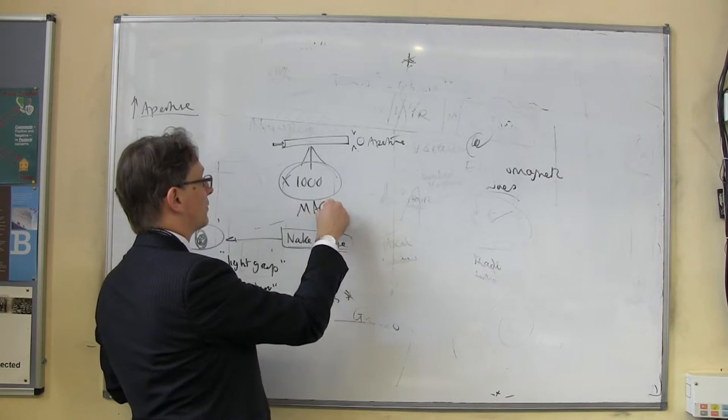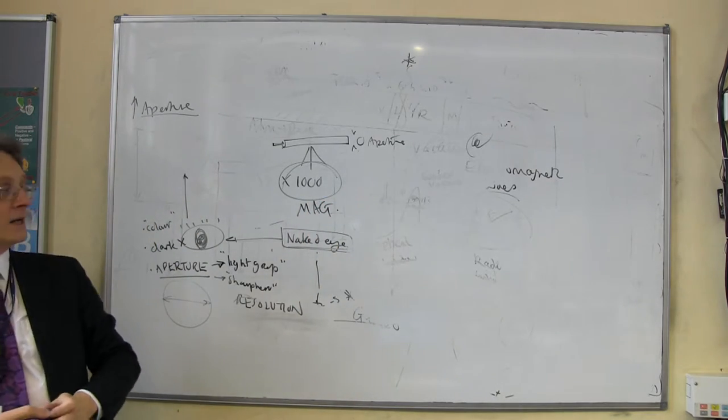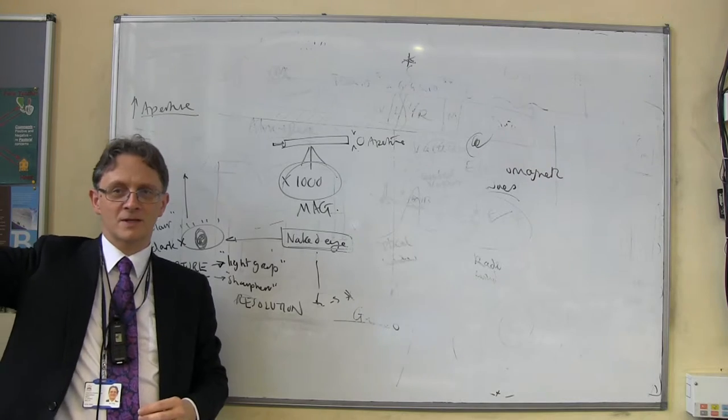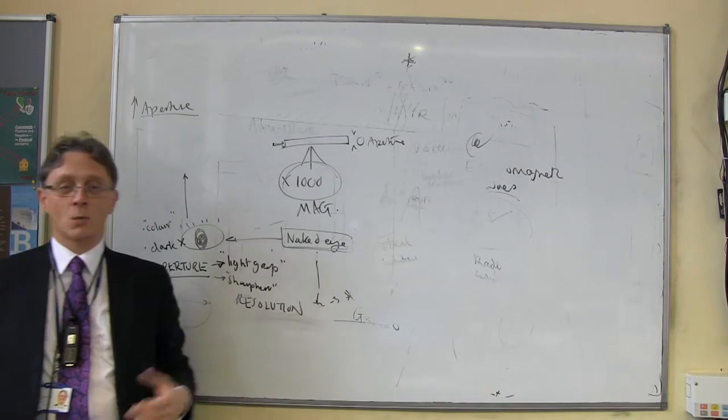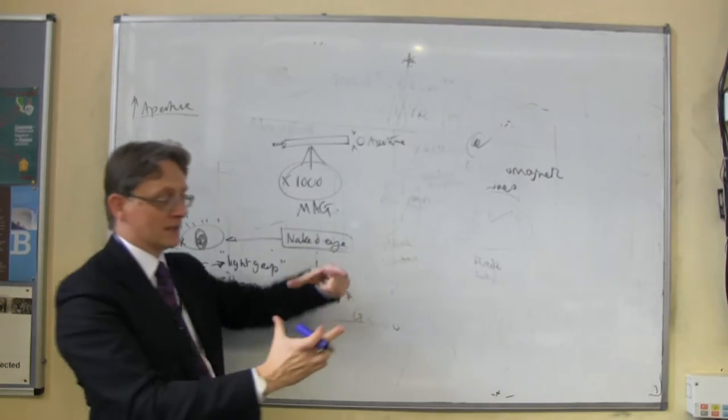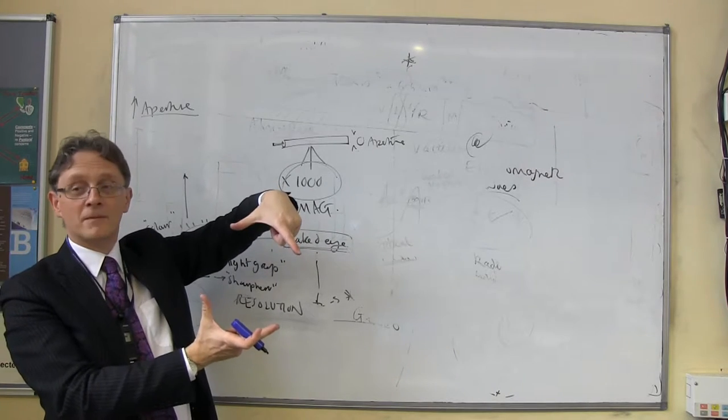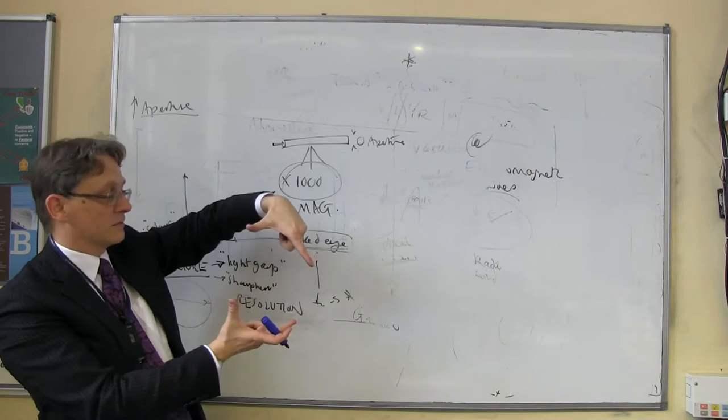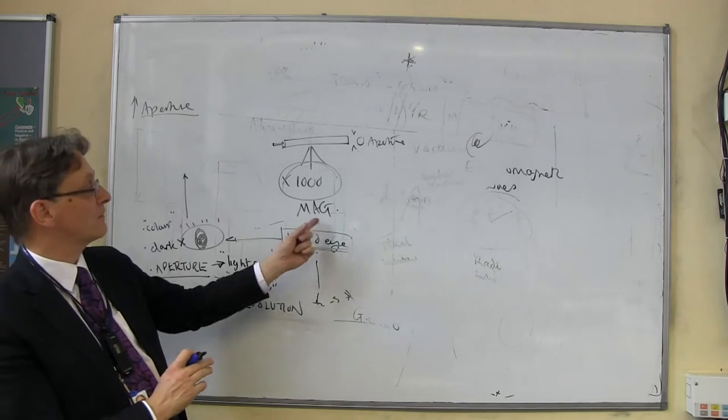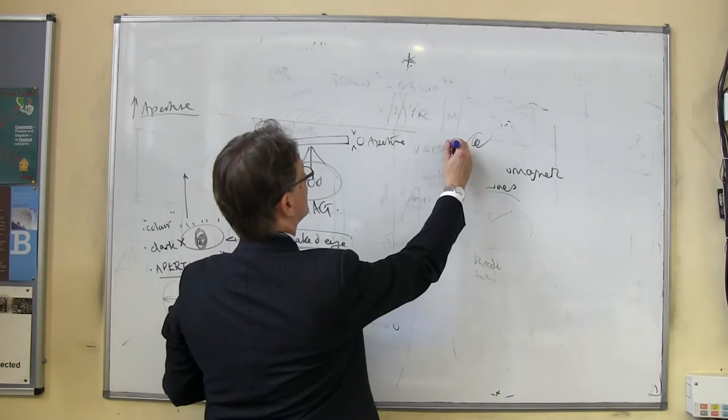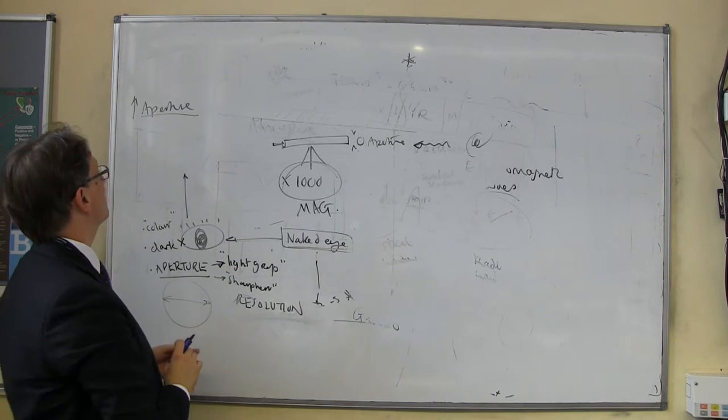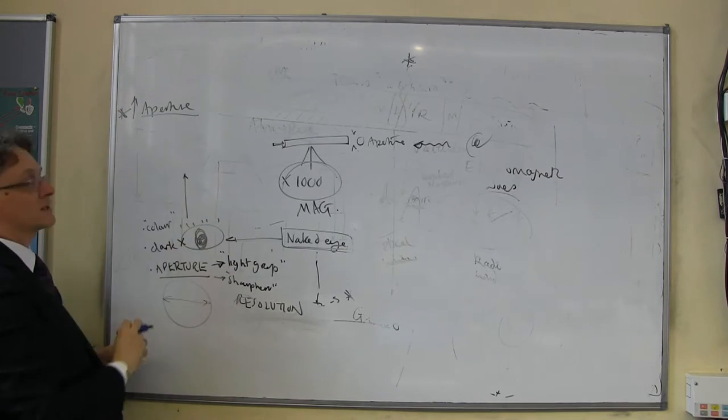Many people think the most important thing with a telescope is its magnification. If you've seen the big blue one we put in the quad for Open Evening, pretty big telescope. First question everybody asks is, what's the magnification? I can't remember, to be honest, because it's largely irrelevant. The important thing is, the hole at the front is about the size of a large dinner plate. So, the point is it gets lots of light in, so you can then magnify the image.